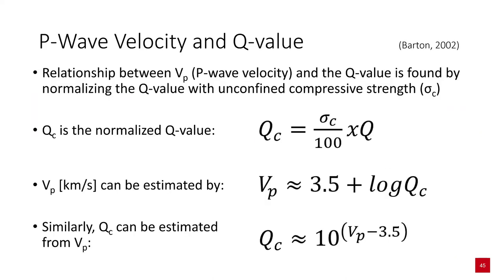In 2002, the relationship between P-wave velocity and the Q-system Q-value was found by normalising the Q-value with unconfined compressive strength σC. The normalised Q-value, Qc, is defined by σC divided by 100 multiplied by the Q-value. P-wave velocity Vp in km per second can be estimated by adding 3.5 to the log of Qc. Similarly, Qc can be estimated from Vp.